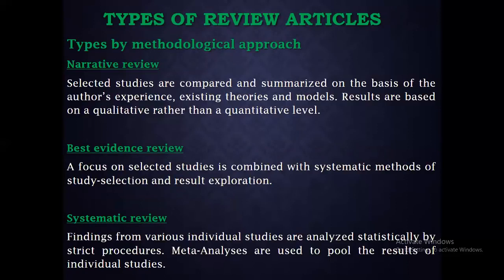Regarding types of review articles, according to methodology, there are three broad classifications: narrative review, best evidence review, and systematic review. In a narrative review, selected studies are compared and summarized based on the author's experience and existing theory and models, and results are based on qualitative rather than quantitative levels.